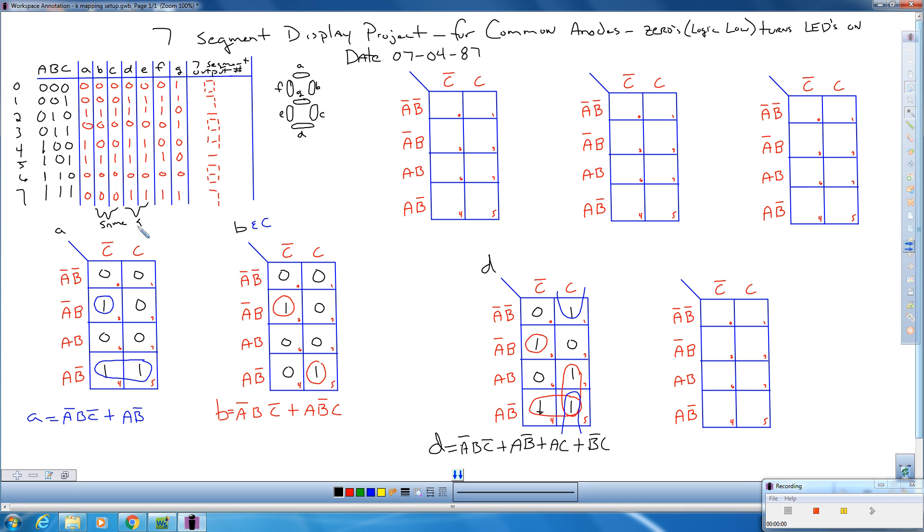So those are the same. That helps us out. D and E are the same, so we don't have to K-map them. Alright, so let's go up here. We're going to K-map F now. So go ahead and K-map F.